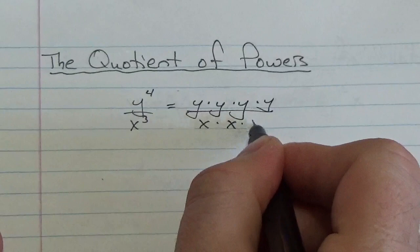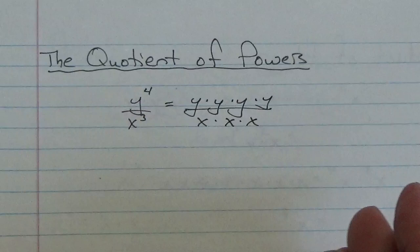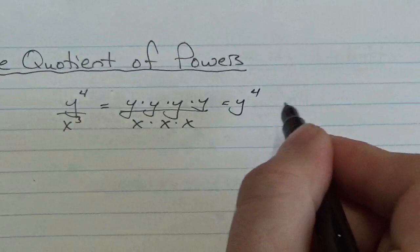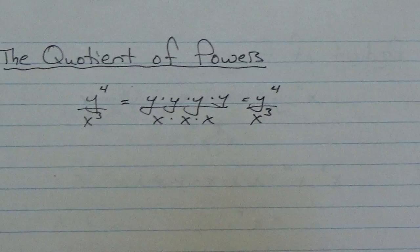Now, what can I do? Well, not a whole lot because I can't do anything with the x's and the y's. I don't know what they are. I don't know how they're related to each other. The best I can say is that in the numerator I've got four factors of y, and in the denominator I've got three factors of x. That's about it, at least for the time being.